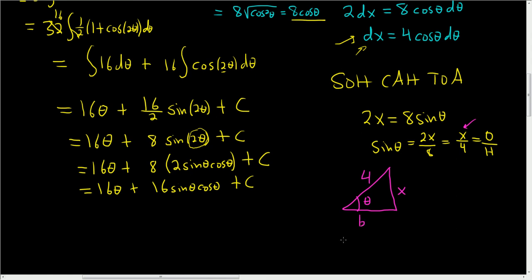we can use the theorem of Pythagoras, which says that 4 squared is equal to B squared plus x squared, to find out the value of B. Subtracting x squared, we end up with 16 minus x squared equals B squared. That means that B is the square root of 16 minus x squared.